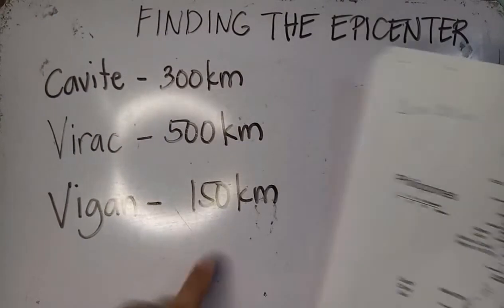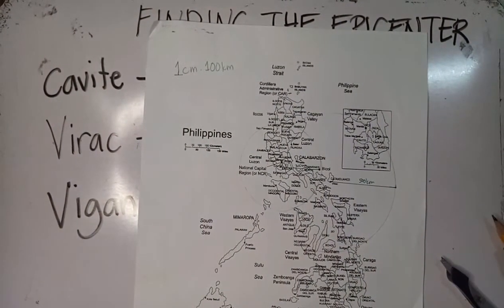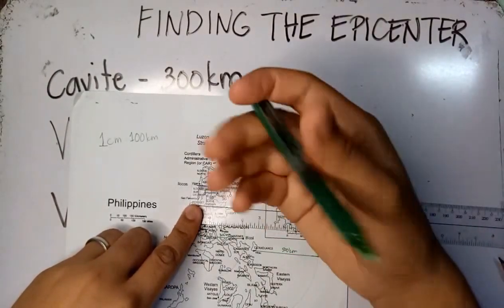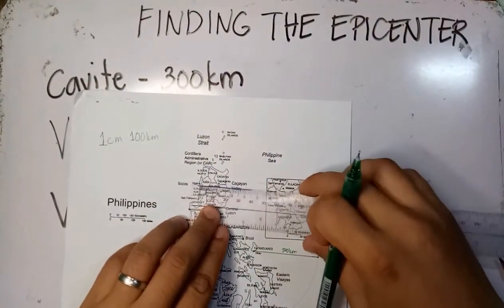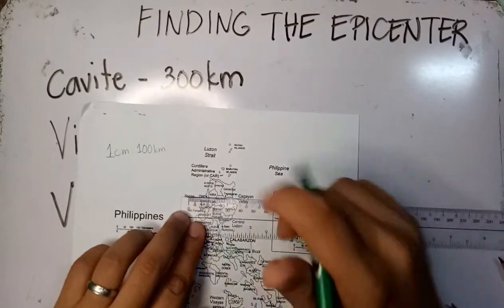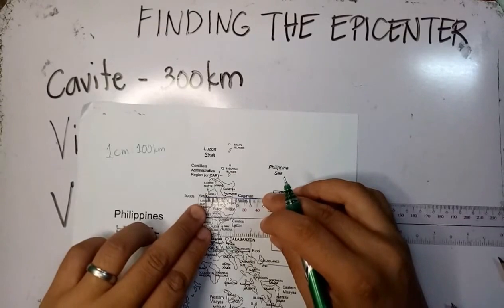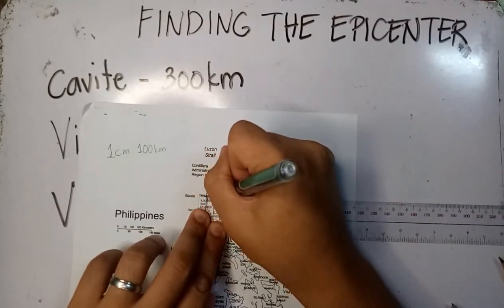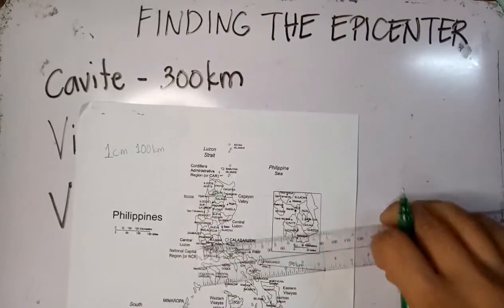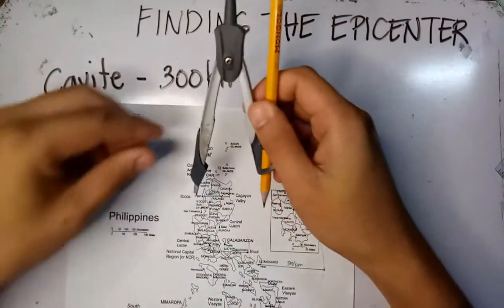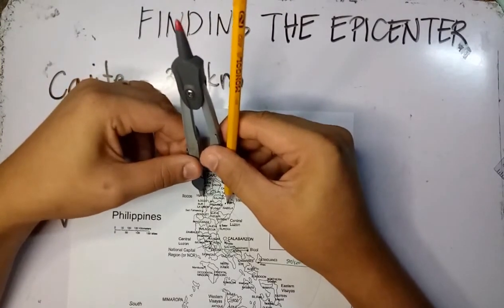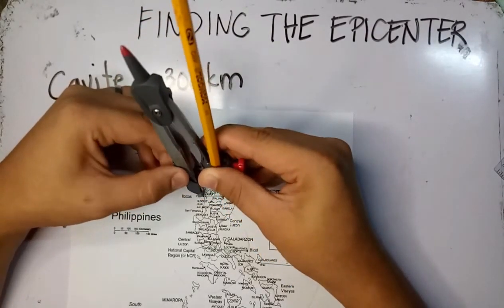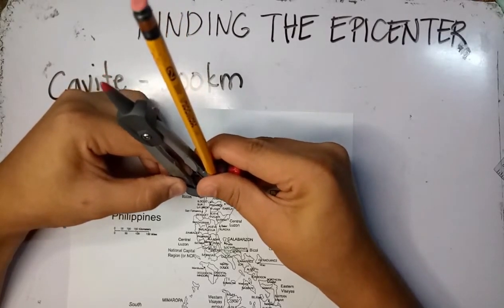We have 300, second station is 500. Now let's do Vigan, the third station. We have 150 km. Among these 3, Virac is the one I haven't visited yet. 150 kilometers, meaning from here, 150. I think, the distance is close, meaning the earthquake or the epicenter is close to Vigan.